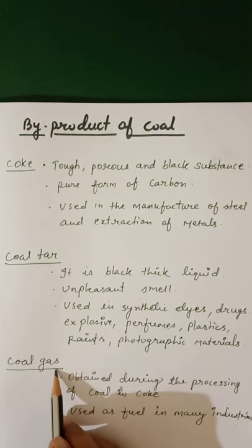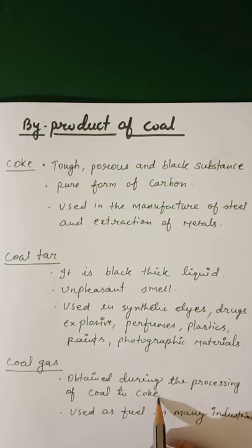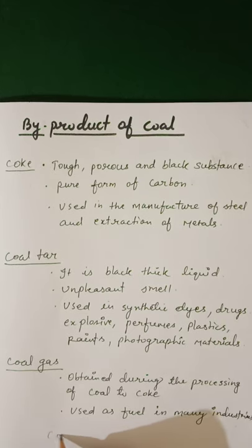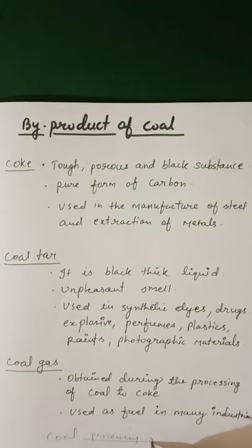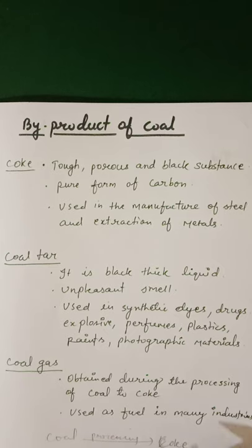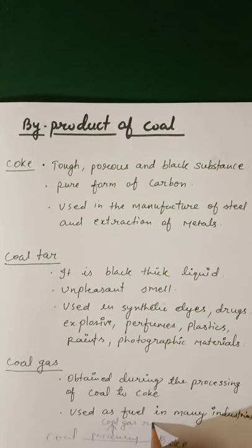Coal gas is obtained during the processing of coal to coke — that is, when coal is processed for coke, coal gas is released during this period. Coal gas is used as fuel in many industries.